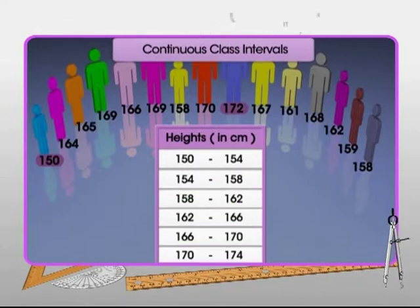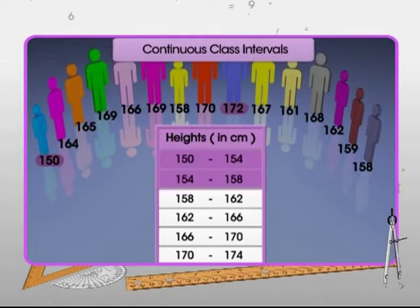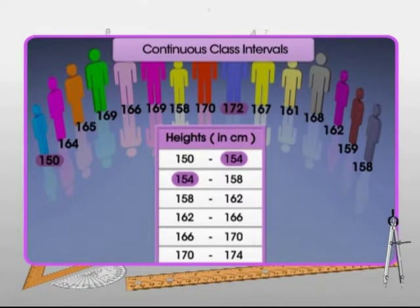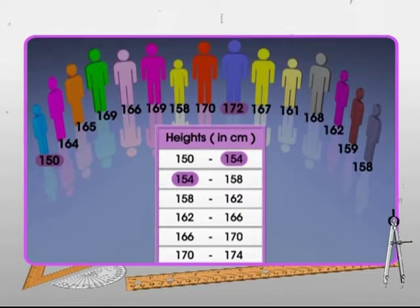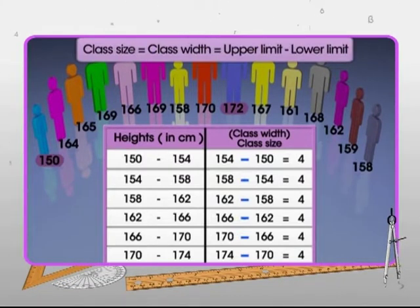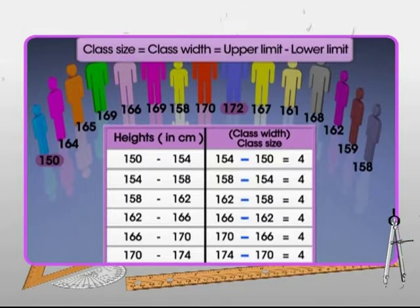This is because in any two consecutive class intervals, the lowest number of the succeeding class is equal to the greatest number of the preceding class. The size of each class interval is called the class size or class width. Here, you can see that the class size of each class interval is 4.